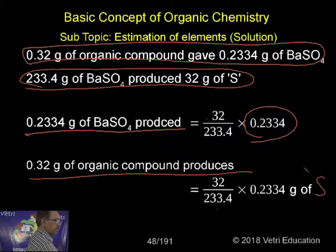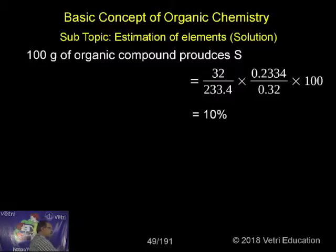100 grams of organic compound produces sulfur equals 32 by 233.4 times 0.2334 by 0.32 times 100. So let me, as usual, remove the fraction. Now what way I have to remove the fraction?